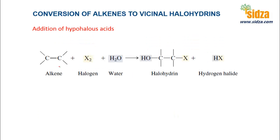When you add a halogen and water to alkenes, the double bond breaks — specifically the pi bond breaks. We know there is a sigma bond and a pi bond in a double bond, and the pi bond is a weak bond. When it breaks, one carbon gets a halogen and the other gets a hydroxyl group. So this is a halohydrin. What is the mechanism of this reaction?